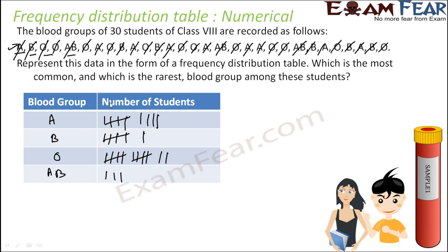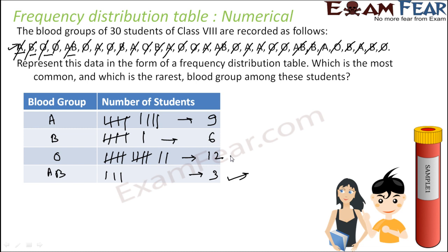Looking at the completed tally, A has 9 students, B has 6 students, AB has 3 students, and O has 12 students. So the rarest blood group is AB, and the most common blood group is O with 12 students.